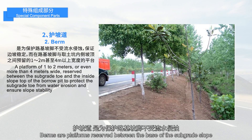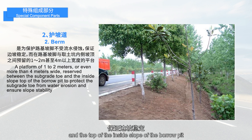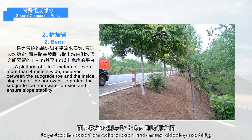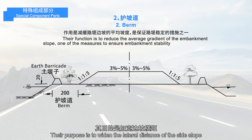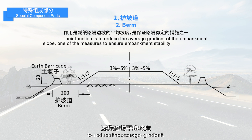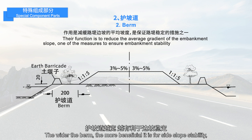Berms and platforms are reserved between the base of the subgrade slope and the top of the inside slope of the borrow pit to protect the base from water erosion and ensure side slope stability, with width from 1 to 2 meters or even wider than 4 meters. Their purpose is to widen the lateral distance of the side slope to reduce the average gradient. The wider the berm, the more beneficial it is for side slope stability.